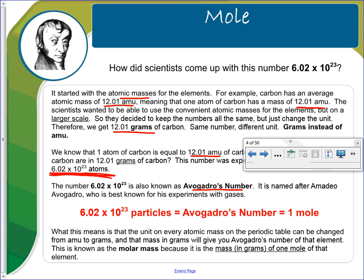So 6.02 times 10 to the 23rd particles would be Avogadro's number, which is equivalent to one mole. What this means is that the unit on every atomic mass on the periodic table can be changed from amu to grams. And that mass in grams will give you Avogadro's number of that element. This is known as the molar mass because it is the mass of one mole of that element.